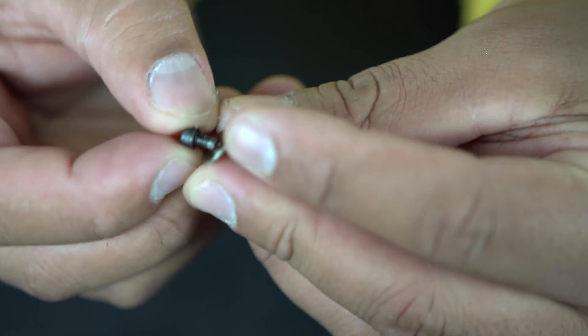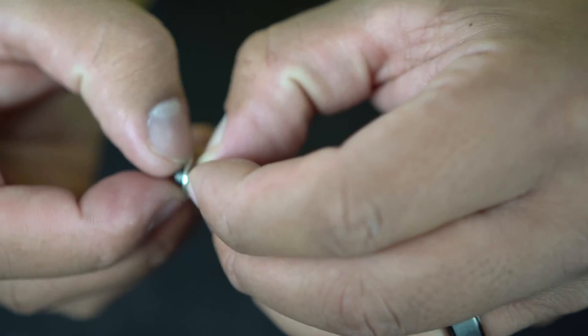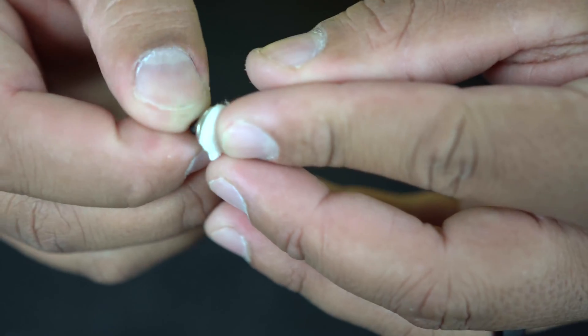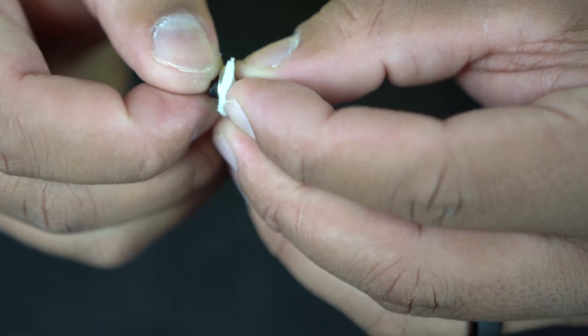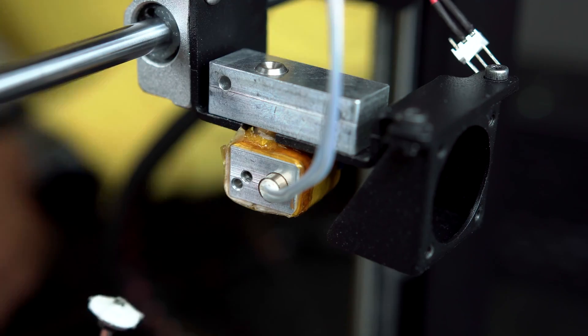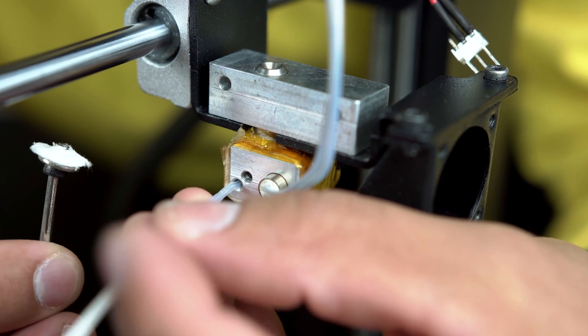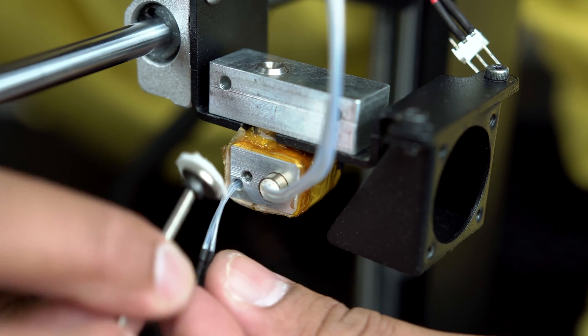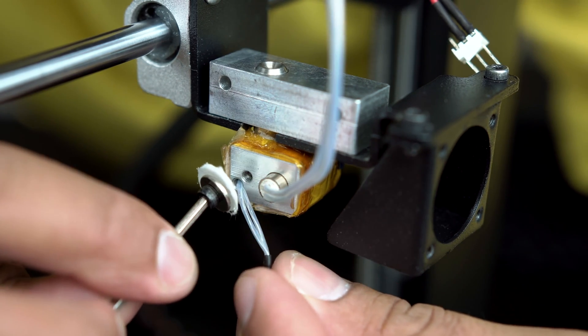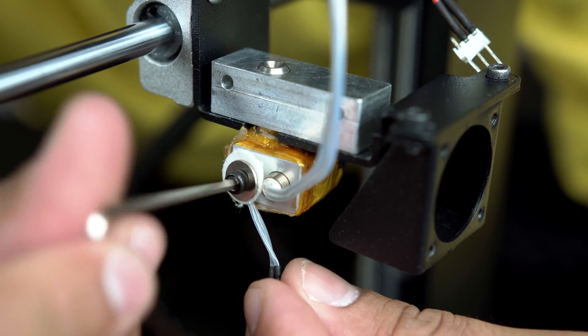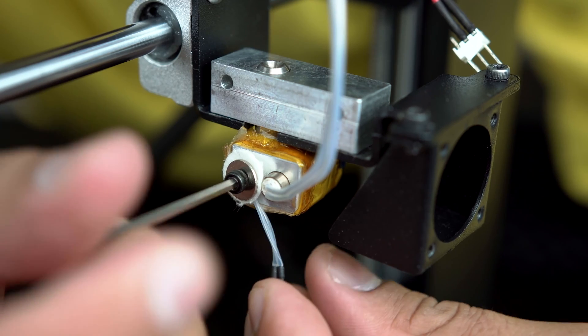Next, place the screw through the metal washer followed by the felt washer. Place your thermistor in the hole on the heating block that does not contain any threads. Now take your screw set with the two washers and the screw, place it in the hole with the threads, and turn clockwise until it's tight.